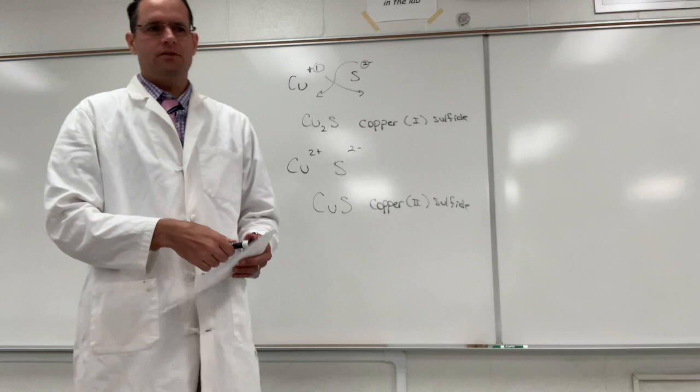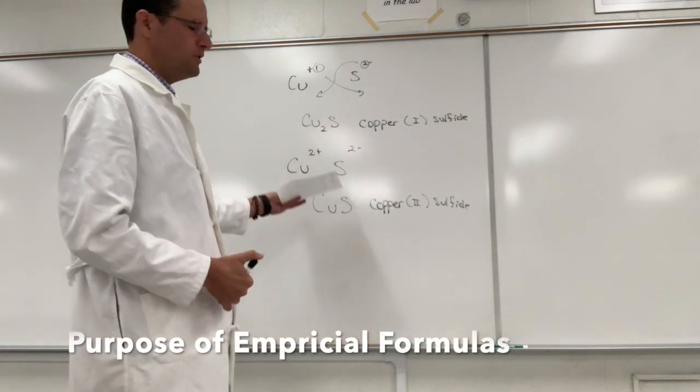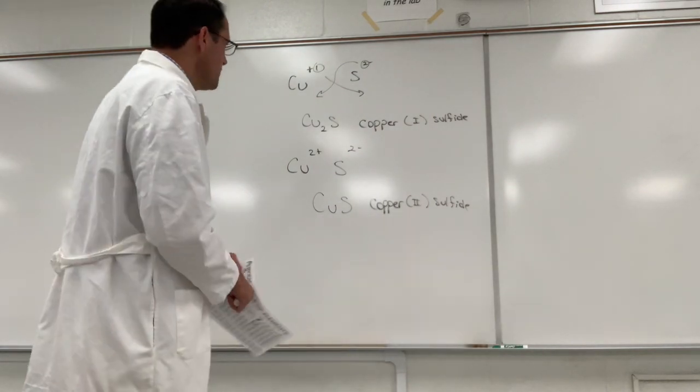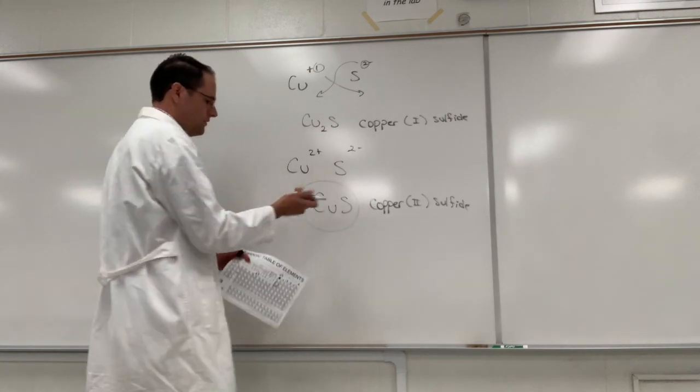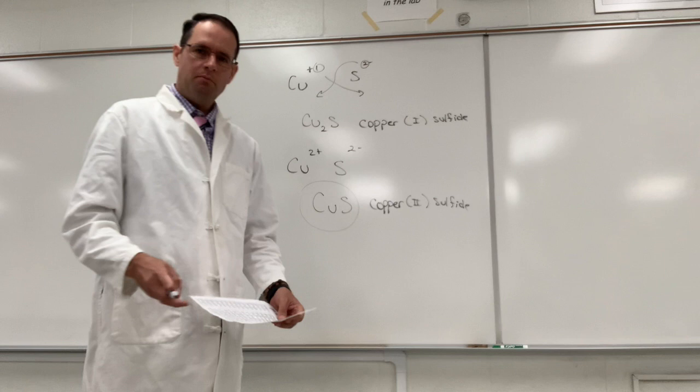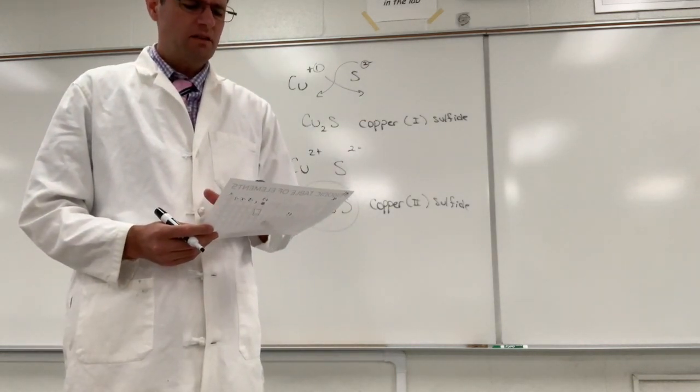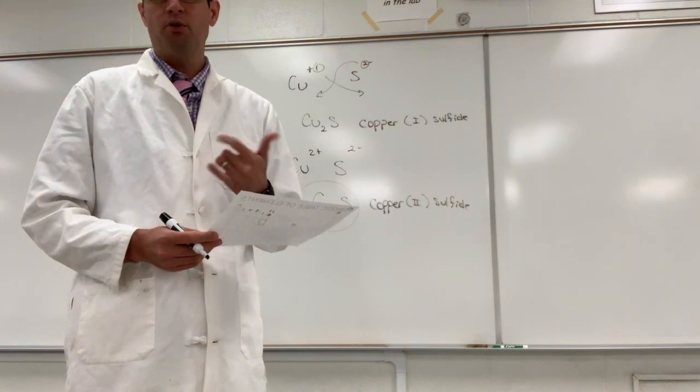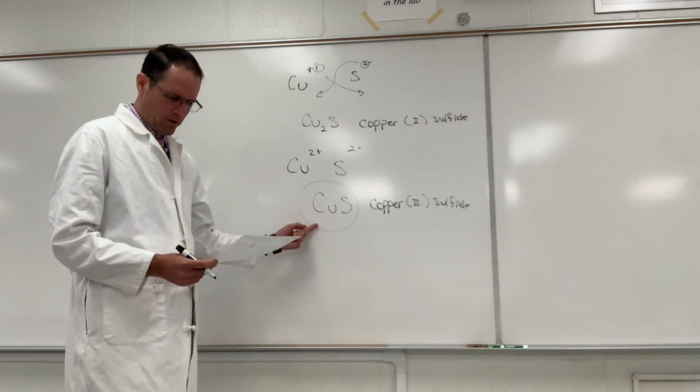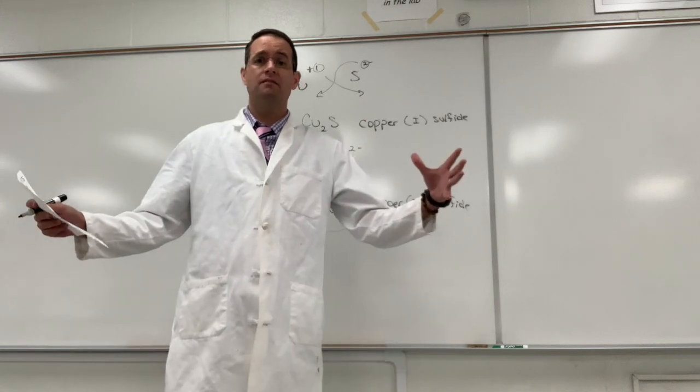Now with today's technology we could just Google or look up the information, but back in the day they didn't know what the formula would be. So if for example this is the formula, we would expect one mole of copper to combine with one mole of sulfur. Since the atomic weight of copper and sulfur are 63.546 and 32.06 respectively, we would expect about 63 grams of copper to react with 32 grams of sulfur. Now that's a huge amount of material.